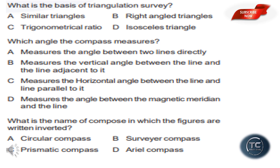What is the basis of triangulation survey? The options are similar triangles, right angle triangles, trigonometrical ratio, and isosceles triangles. Triangulation survey is based on equilateral triangles, which are similar triangles. The answer is option A: similar triangles.